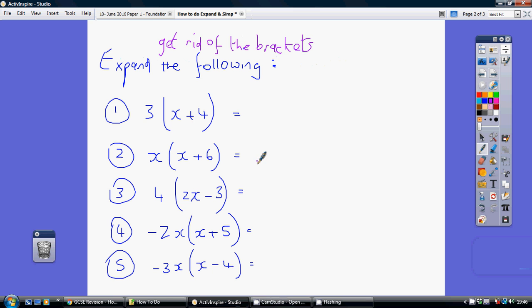Think of the claw. Put the claw in. We're going to do 3 times x and then 3 times 4. This is multiplying. 3 times x is 3x. Get the sign right, it's a plus. And then 3 times 4 is 12. There we go, we've expanded it, we've got rid of the brackets. Brackets here, no brackets here.